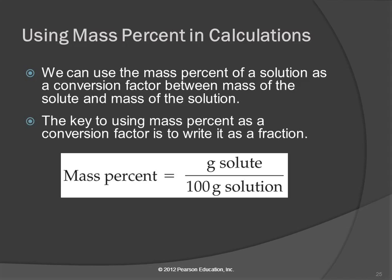We can use these concentration units as conversion factors. And here it's important to recognize that mass percent equals grams per 100 grams. And when you recognize that and write it out this way, then you see, oh, that's a conversion factor.